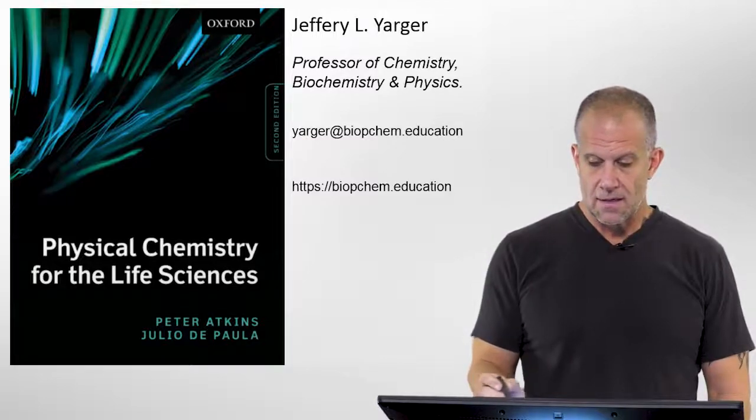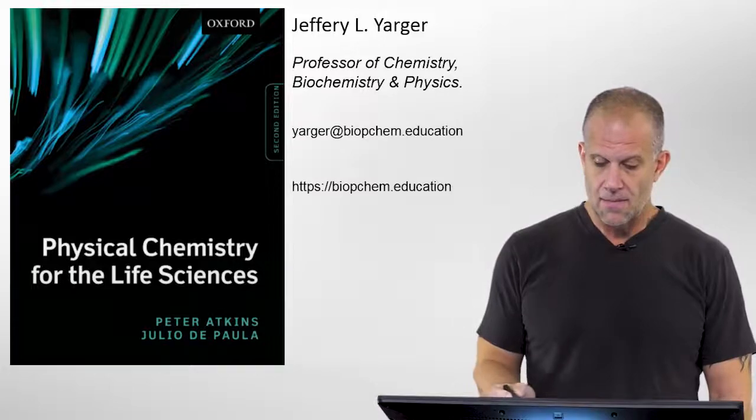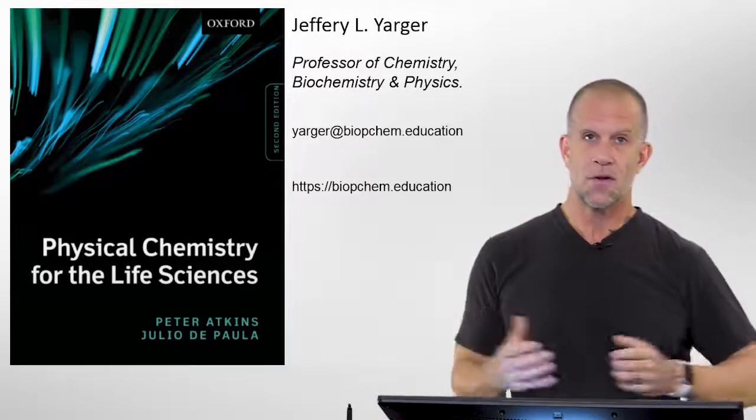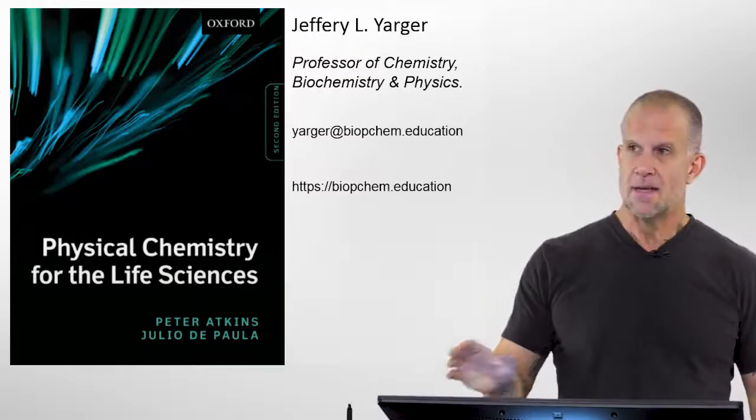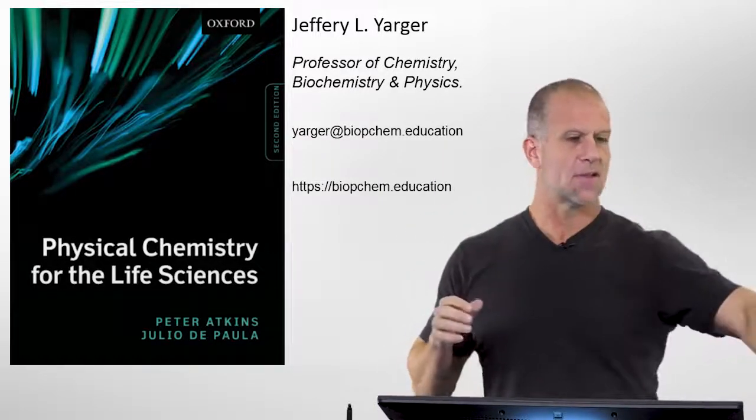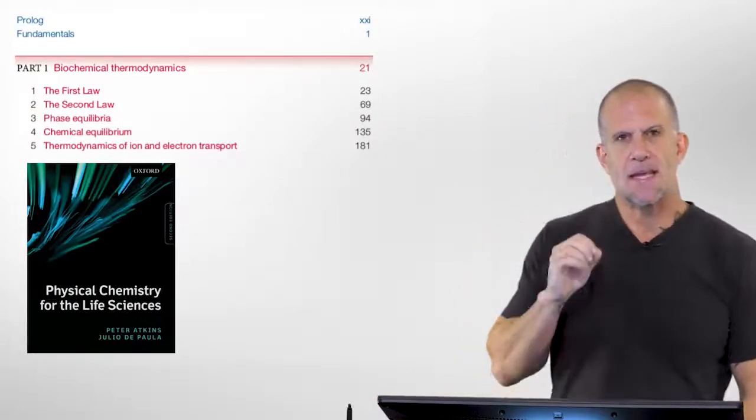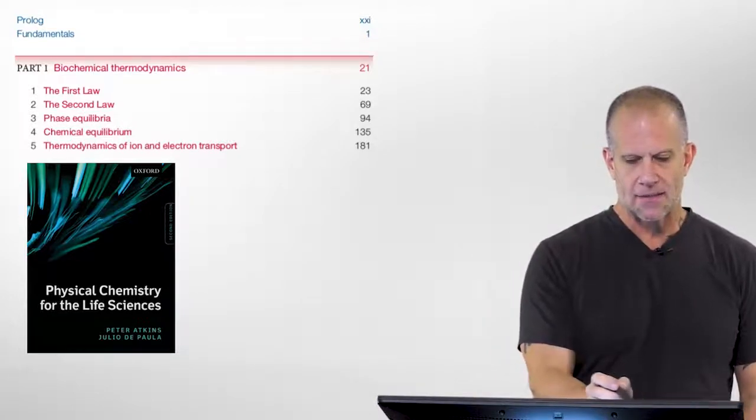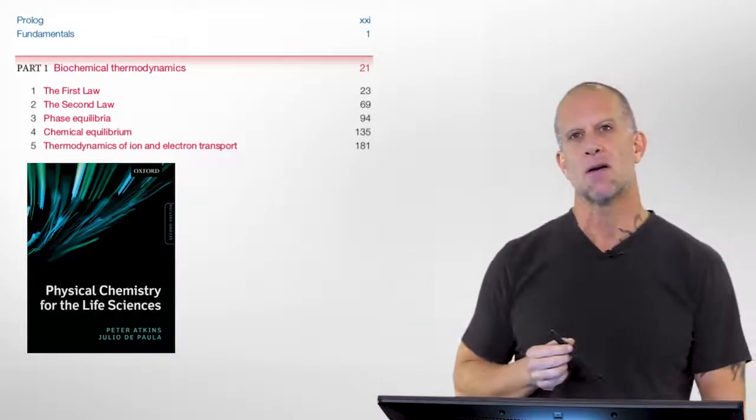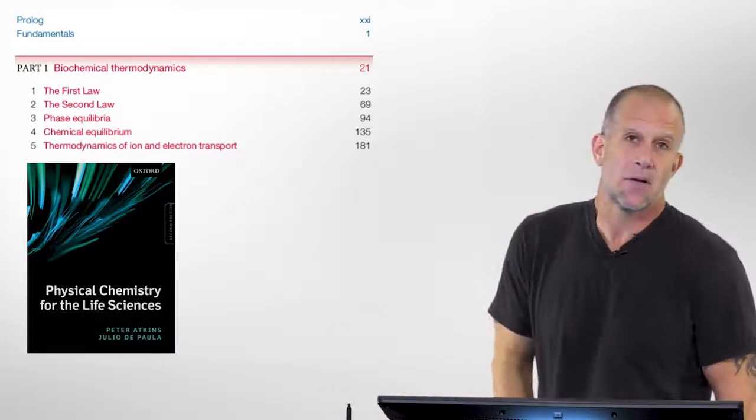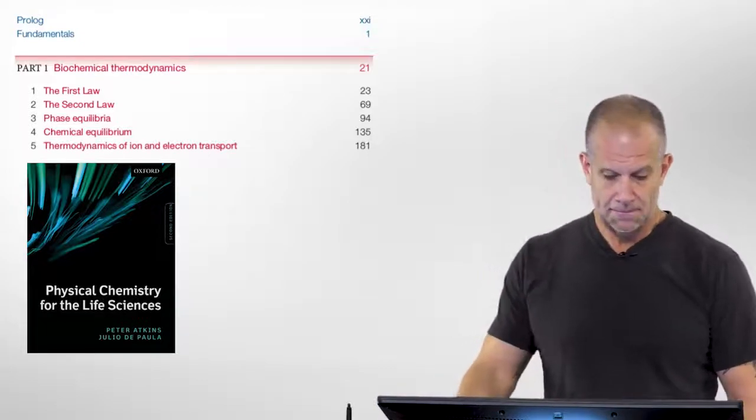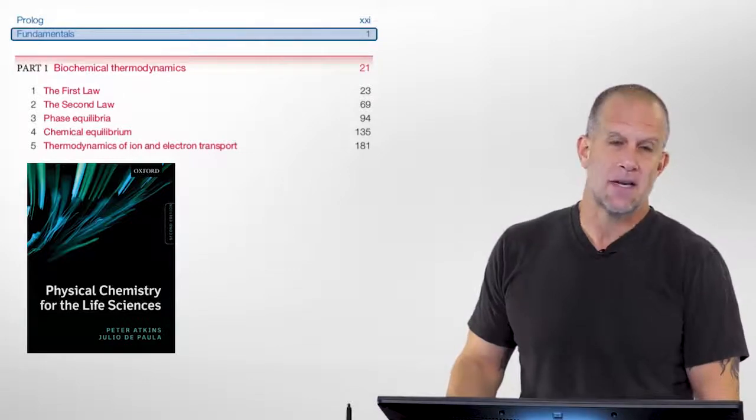You can reach me at Yager at biopchem.education and I have a general website called biopchem.education where a lot of these videos and other ancillary material will be posted. This is edition two of physical chemistry for the life sciences. This fundamentals is basically the first 20 pages of background material before we get into the first part of this book which is looking at biochemical thermodynamics. We're going to make an overview video for each of the individual chapters.